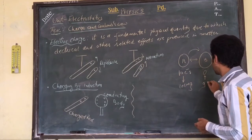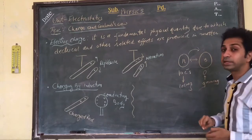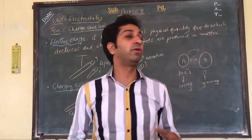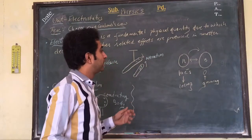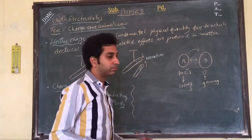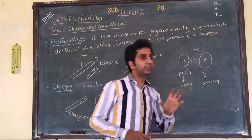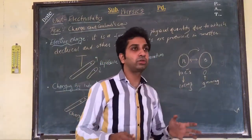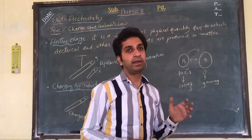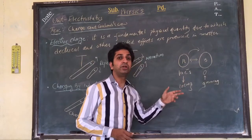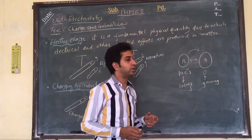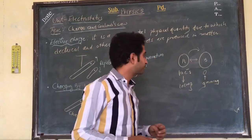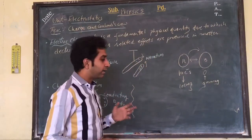The body which is losing electrons becomes positively charged, while the body which is gaining electrons becomes negatively charged. So there are basically two types of charges — positive and negative. Negative means the body is gaining electrons continuously, and positively charged means the body is losing electrons. Now we have different charging methods.